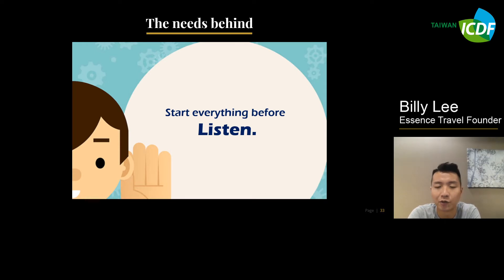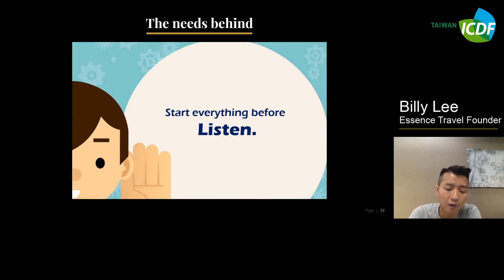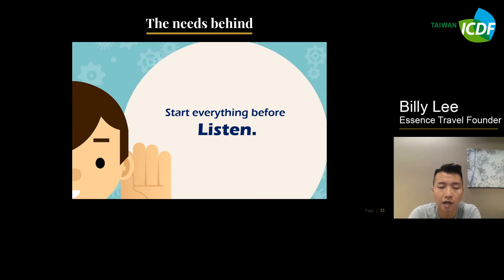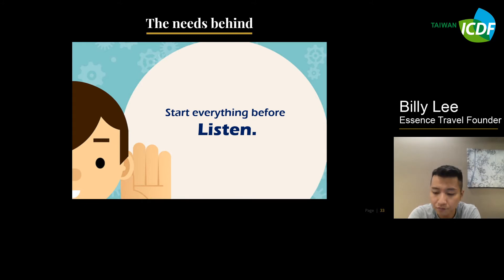Everything must have a reason, so you need to find the reason and solve the problem — then you can do everything very smoothly. Start everything before listening, even though it starts your brain. You need to understand your target audience. What are the needs they want? Before they buy a tour, what are they craving for? Some people just want to take a lot of photos and post them on Facebook or Instagram — this is their needs behind. And some people who are very stressed at work want to relax, want a quiet time to refresh themselves. So this is the needs behind. When you have different needs behind, you need to start different things. Start everything before listening — listen to the needs behind.